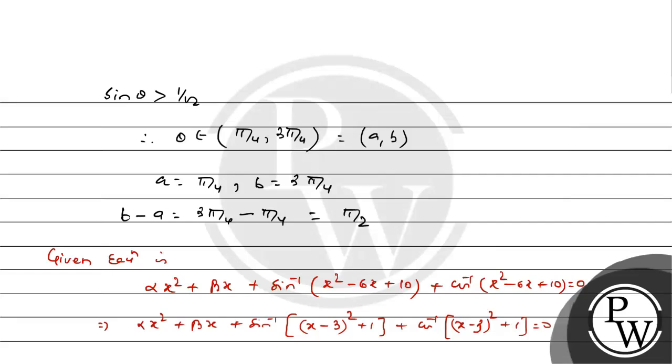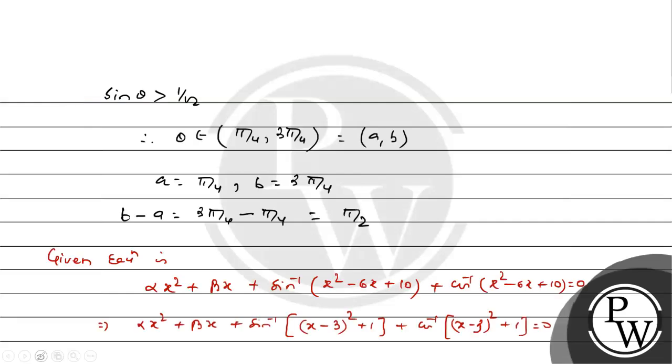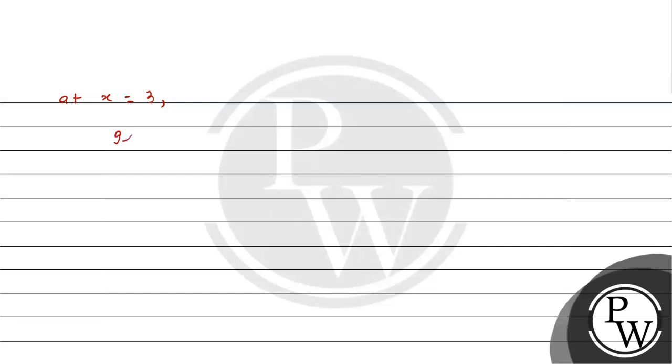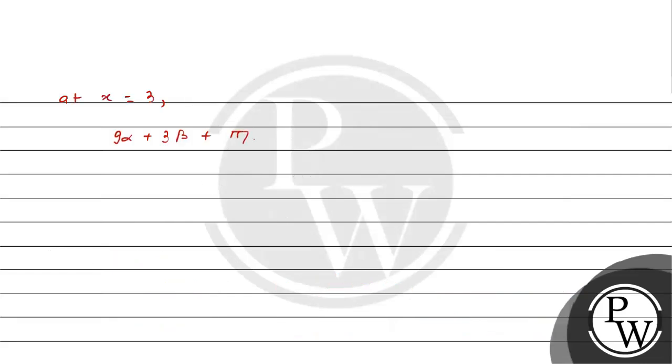At x = 3, sin⁻¹(1) + cos⁻¹(1) at x = 3. This becomes 9α + 3β + sin⁻¹(1) = π/2 and cos⁻¹(1) becomes 0, and this gives 9α + 3β + π/2 = 0.